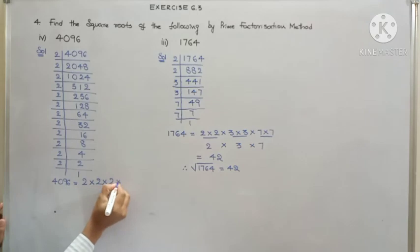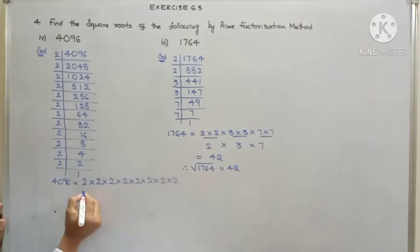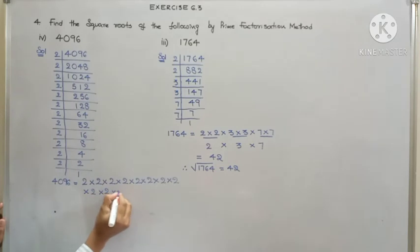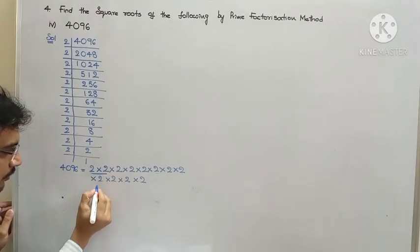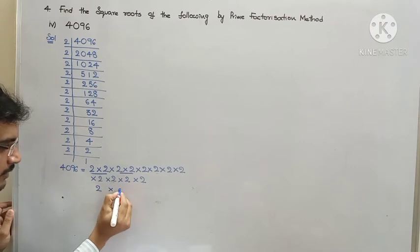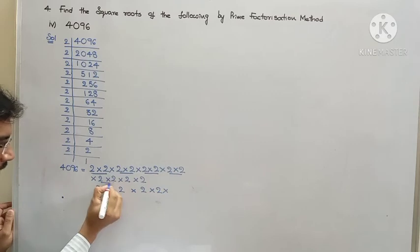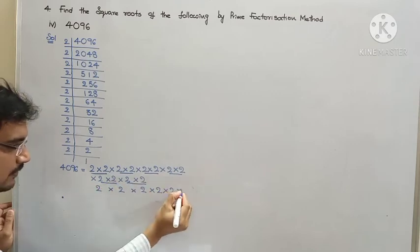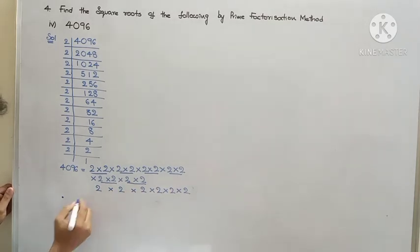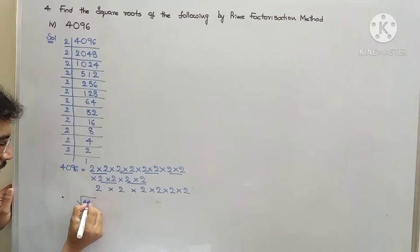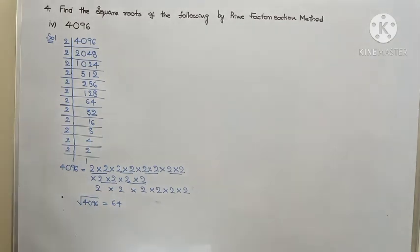So, 4096 we can write as 1, 2, 3, 4, 5, 6, 7, 8, 9, 10, 11, total 12 twos. So, from each pair, we are going to take 1 factor. So, from this pair, we are going to take 2. And from this pair, we are going to take 2. So, 2 times 2 is 4, times 2 is 8, times 2 is 16, times 2 is 32, times 2 is 64. Therefore, square root of 4096 equals 64.